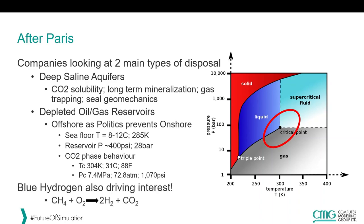Another driver for interest in pure CO2 streams is blue hydrogen: converting methane resources into hydrogen creates large quantities of CO2. Unlike dispersed emissions from cars, engines, and power plants, this CO2 is highly concentrated at a large hydrogen production site, making it far easier to dispose of — large volumes in a concentrated area can be piped directly into an offshore storage facility.